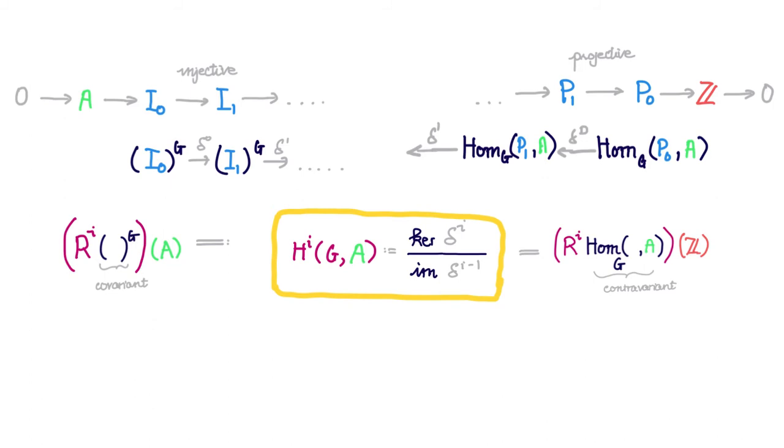Thus, we want to slightly change perspective and rephrase the definition of this i-th cohomology group in a way such that their computation involves only a fixed projective resolution of a fixed G module.